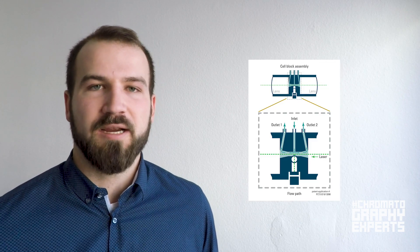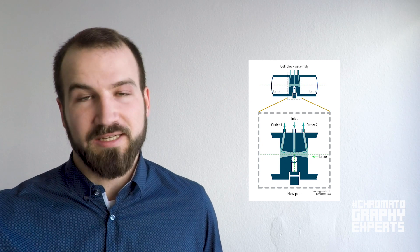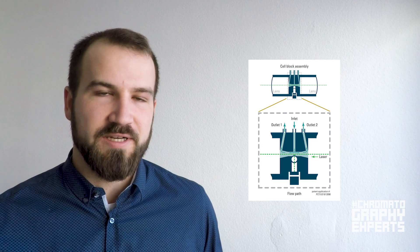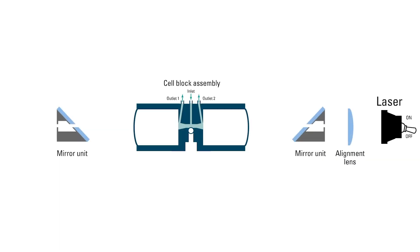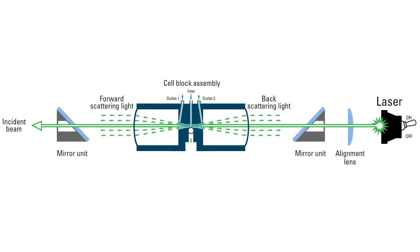We did this by completely redesigning and rethinking light scattering. Instead of a glass flow cell, we used a black peak flow cell. This flow cell only lets the light out at 10 degrees, 90 degrees, and 170 degrees — exactly the angles where we are measuring the scattered light. This also allows us to use a green laser compared to the conventionally used red laser, and the green laser generates approximately three times more signal.